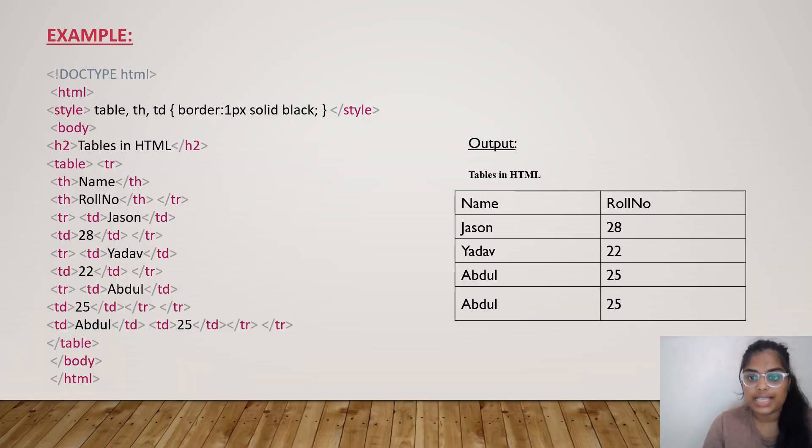This is the example. We already saw one example. This is the next example, a basic example where we use the table. Here we use the style border. We gave tables in HTML as the name, and row number for three different people.